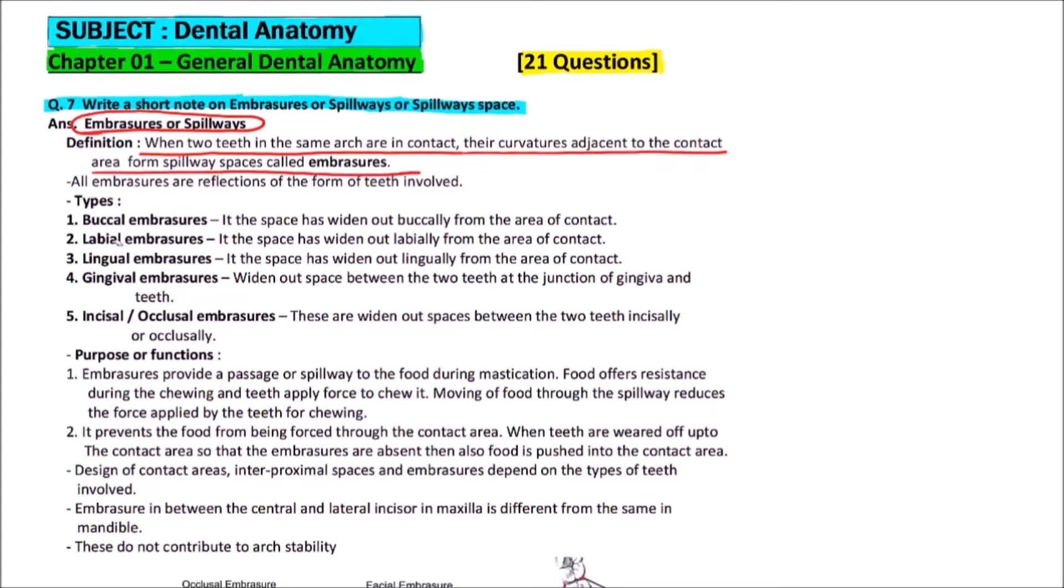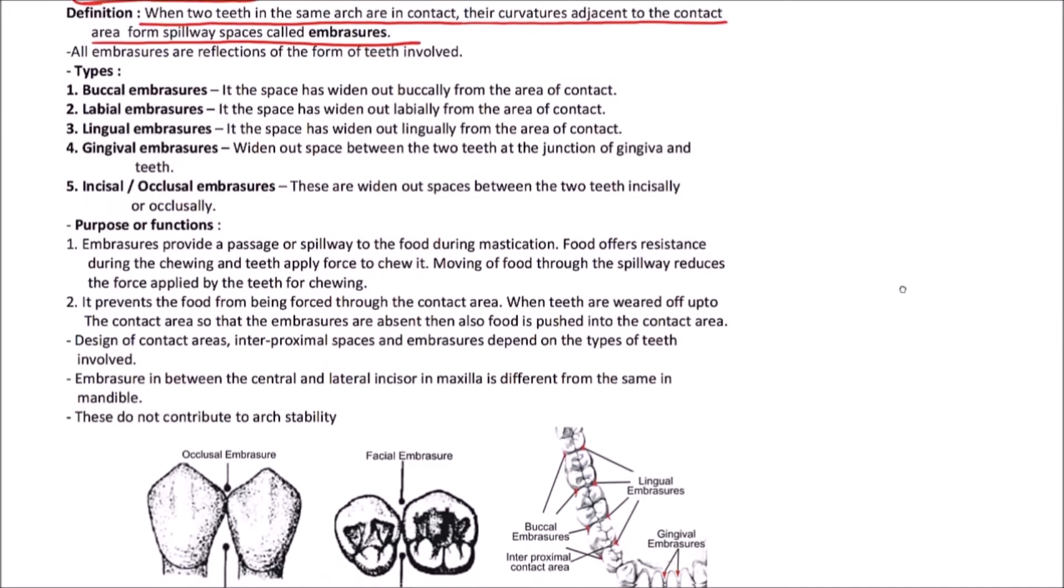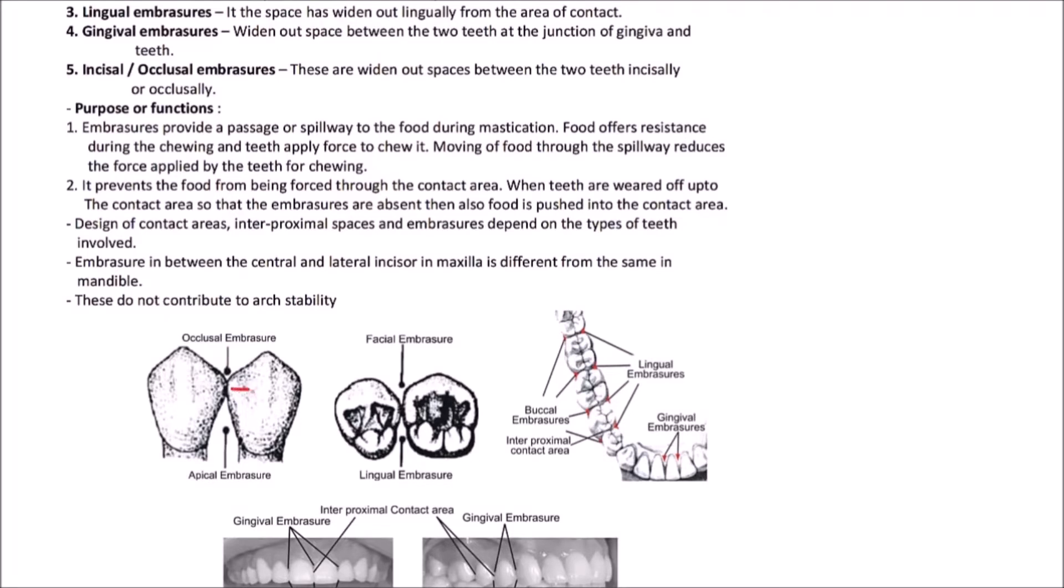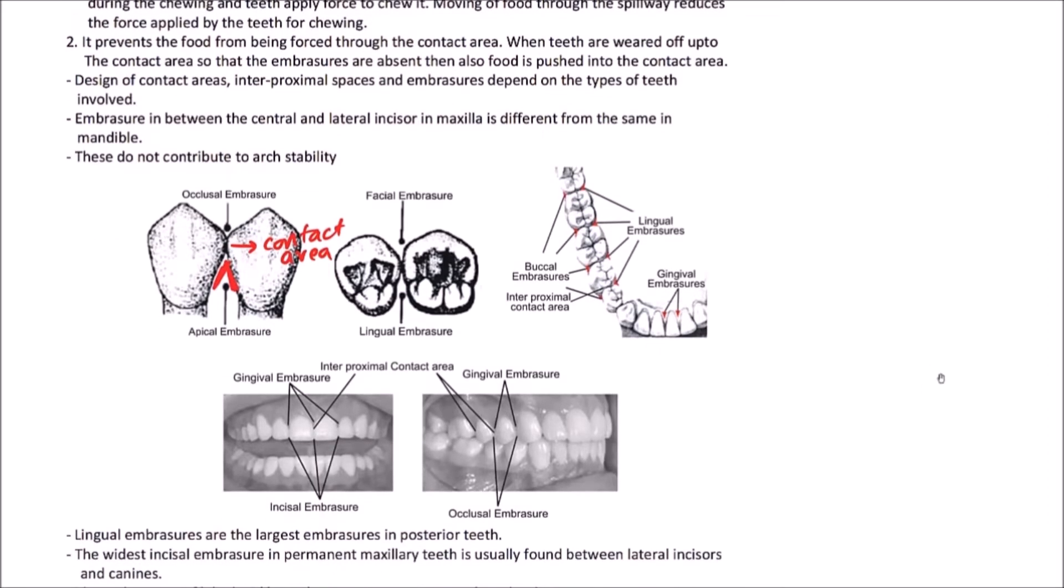All embraces are the reflections of the form of teeth which are involved. For example, this is the contact area and this is the occlusal embracer, and towards the gingiva this is the apical or gingival embracer. In the diagram, we can also observe these are two teeth, crown of two teeth, this is the contact area, and this is showing the gingival embracer.